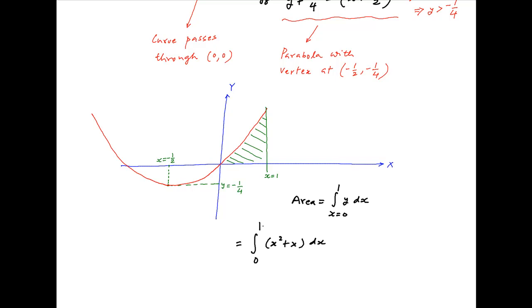Substituting the value of y from the equation of the curve we get the area is equal to integral of x square plus x between the limits 0 and 1. This is equal to x cube upon 3 plus x square upon 2 between the limits 0 and 1 which simplifies to 5/6 which is the required area.